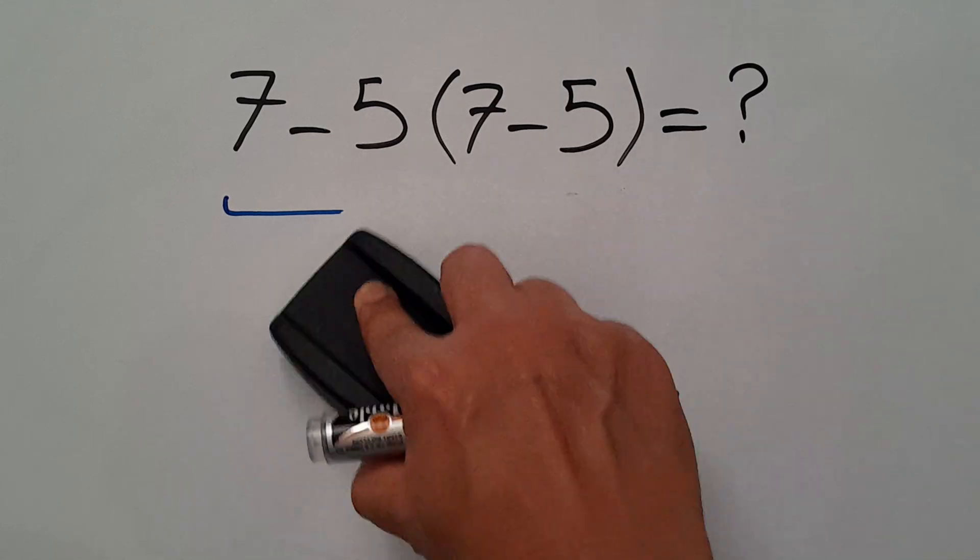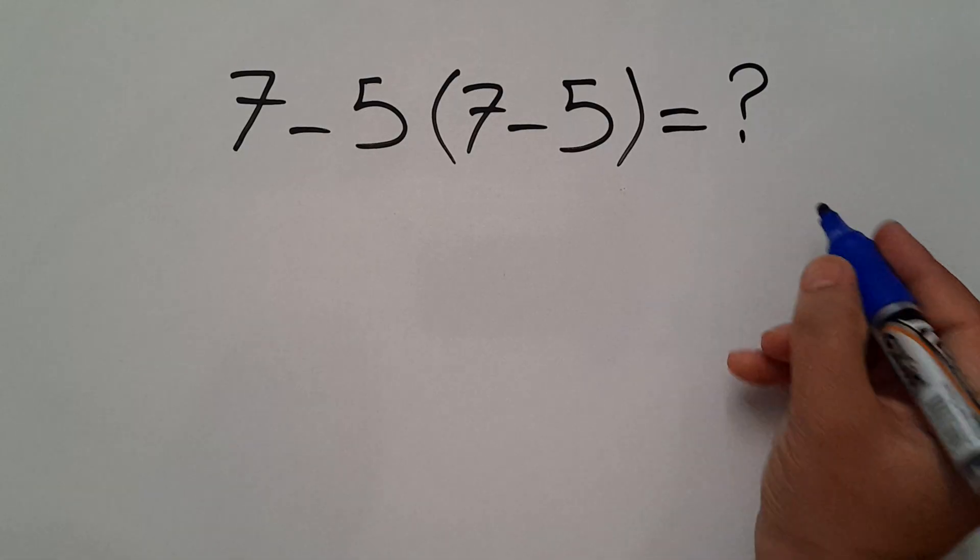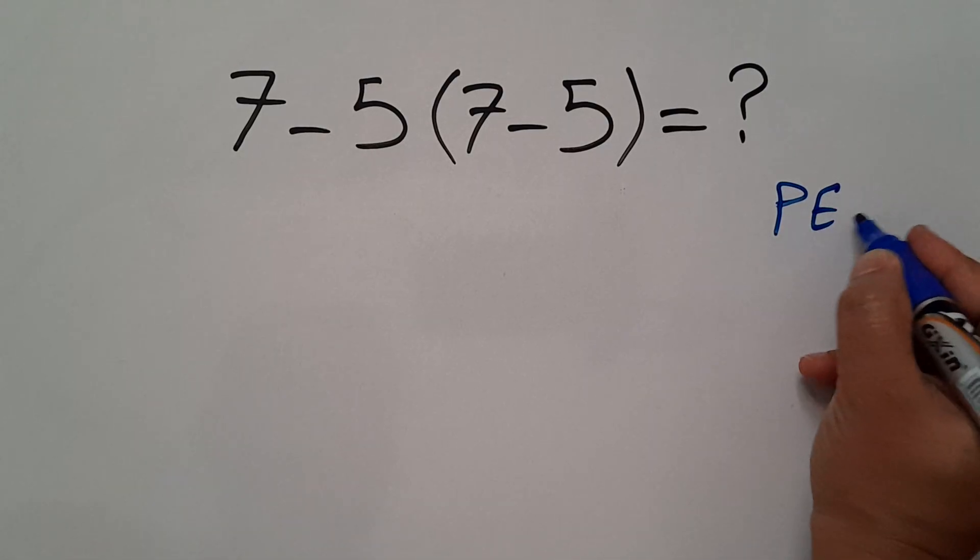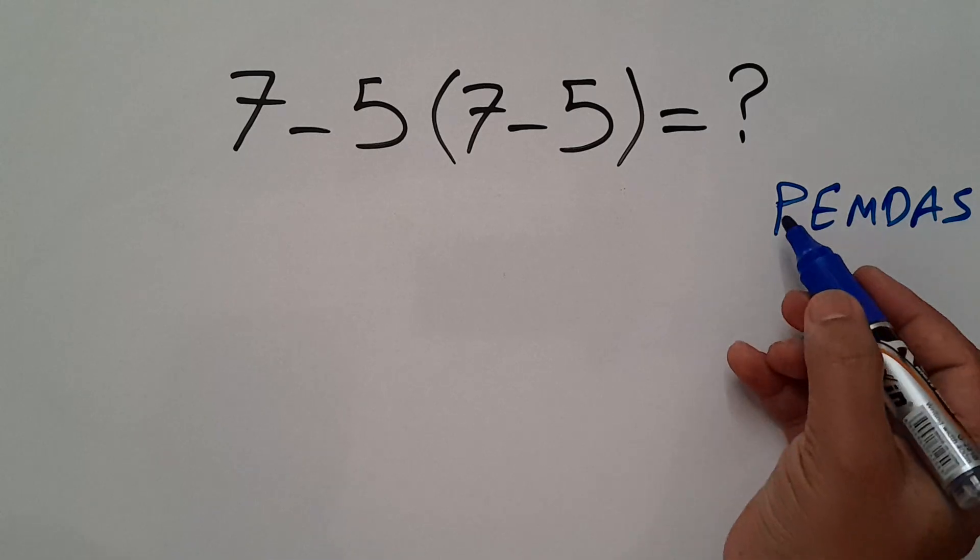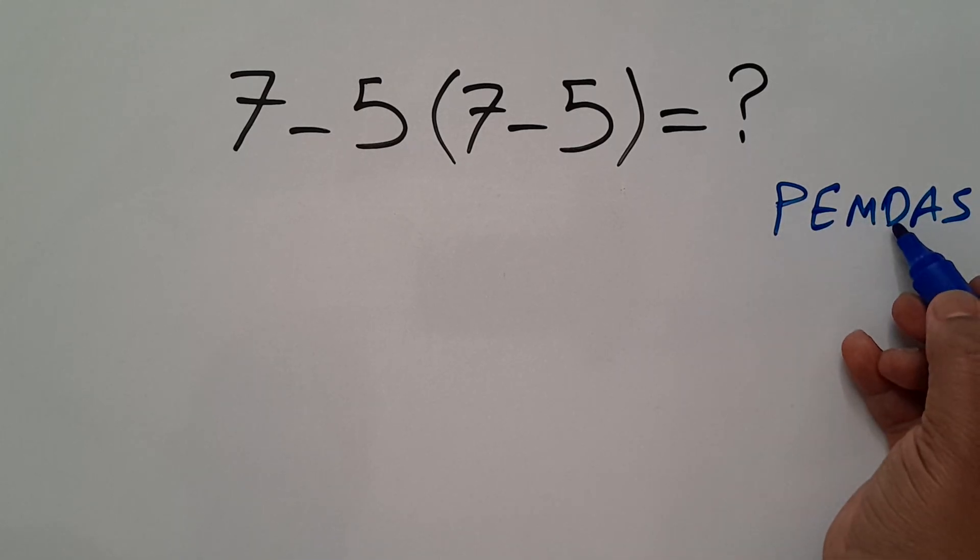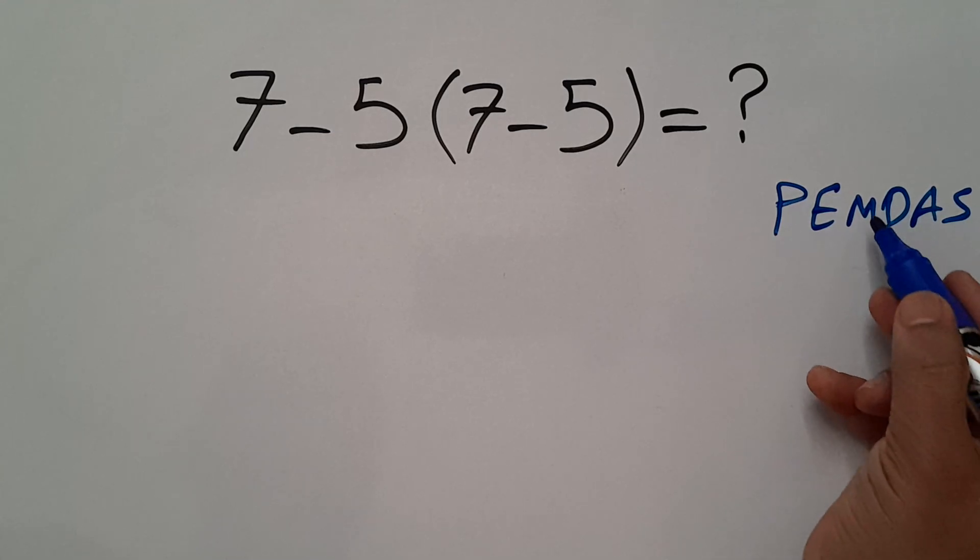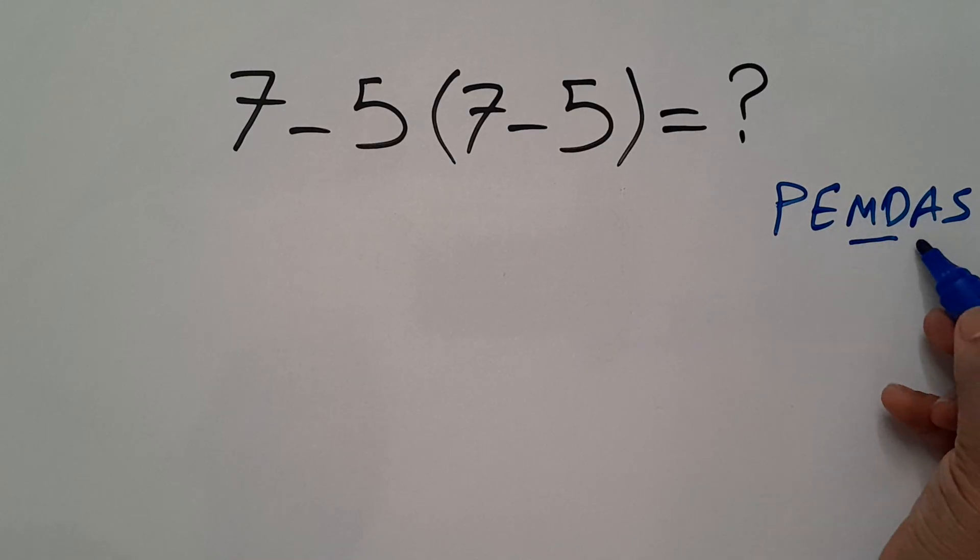Because according to the order of operations, which is PEMDAS, first we do parentheses, then exponents, then multiplication and division, and finally addition and subtraction. Remember that multiplication and division have equal priority and we have to work from left to right, and the same applies to addition and subtraction.